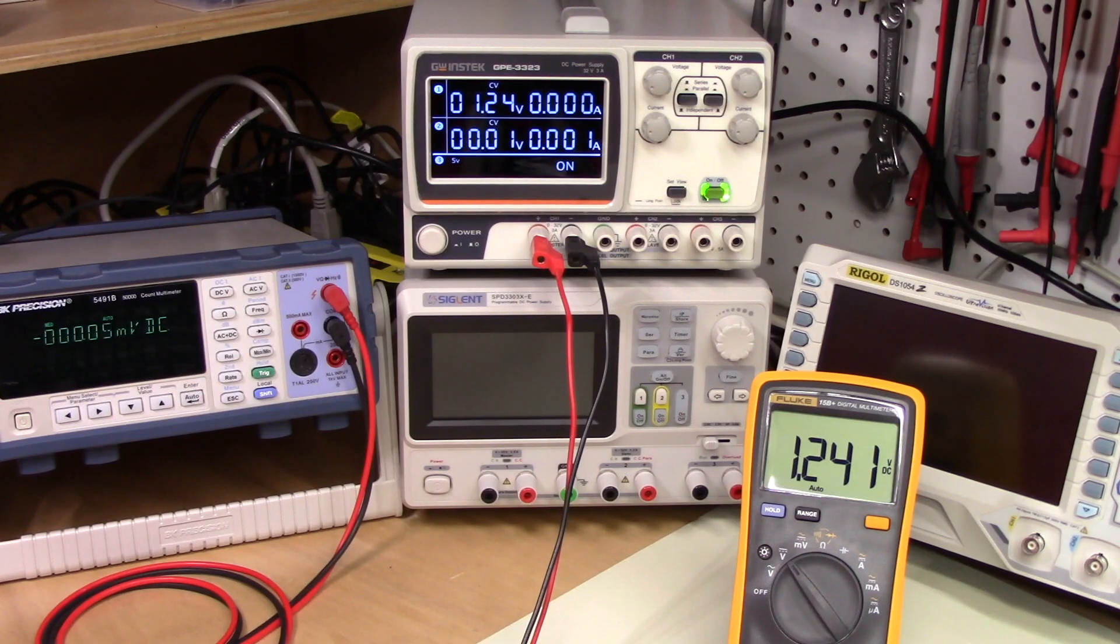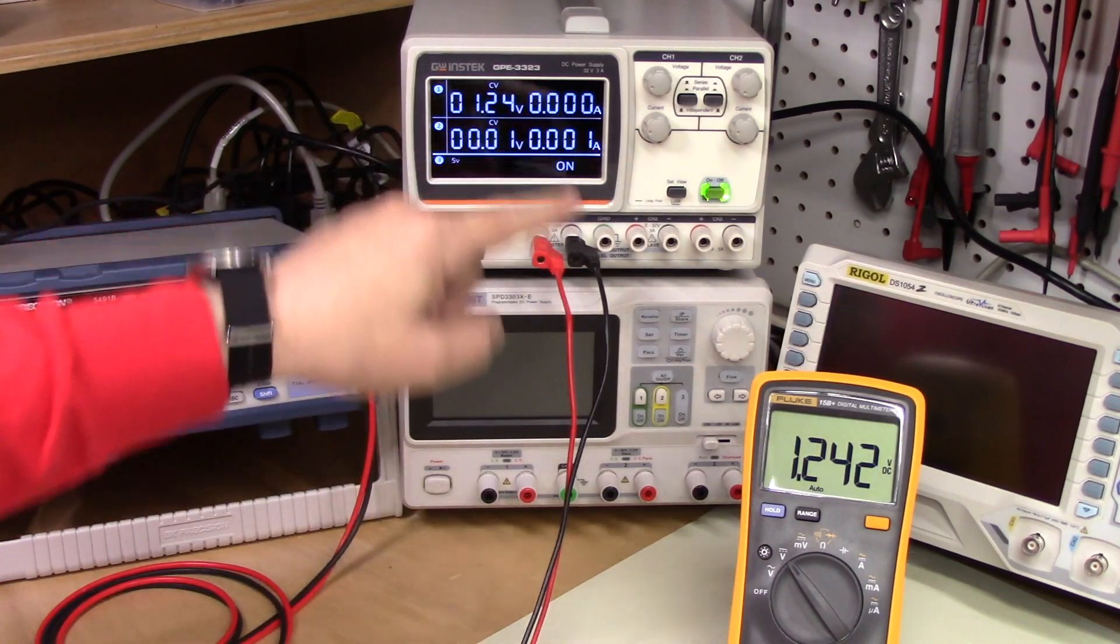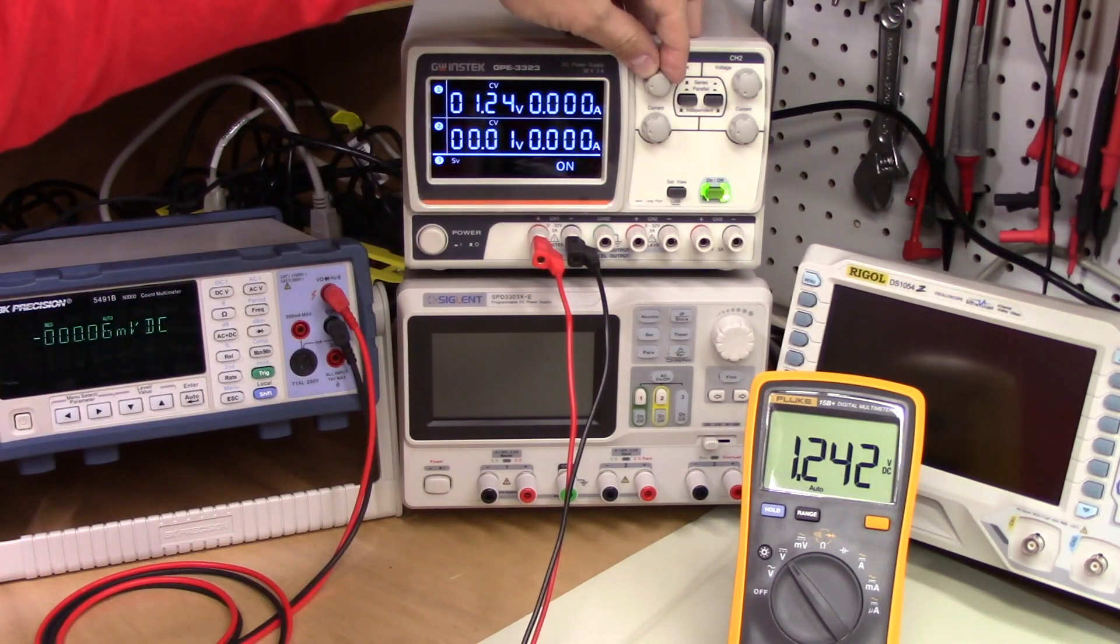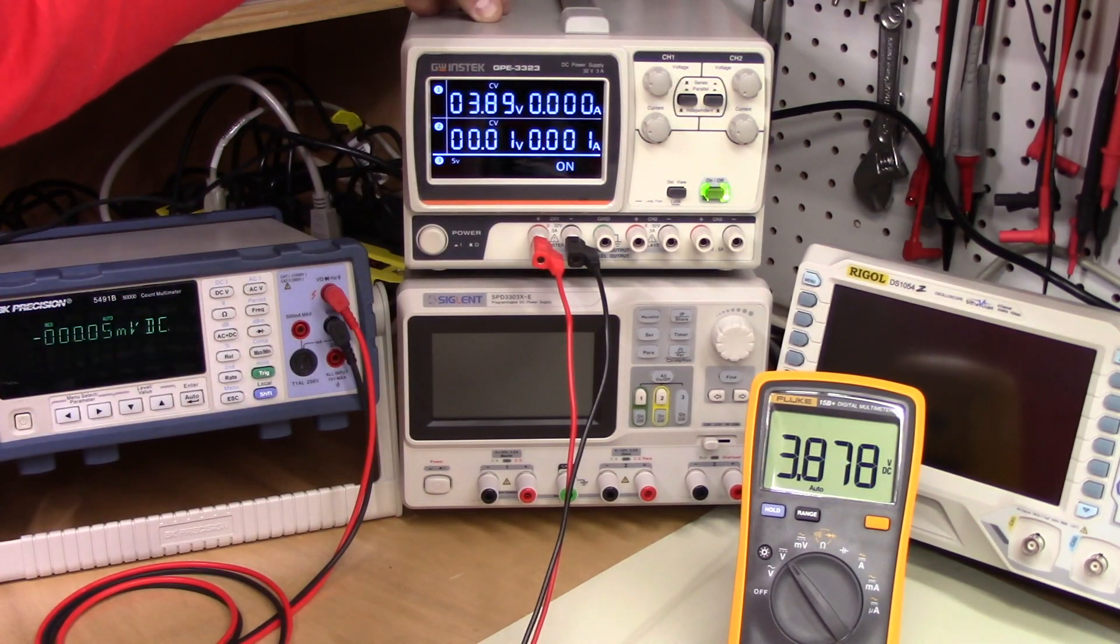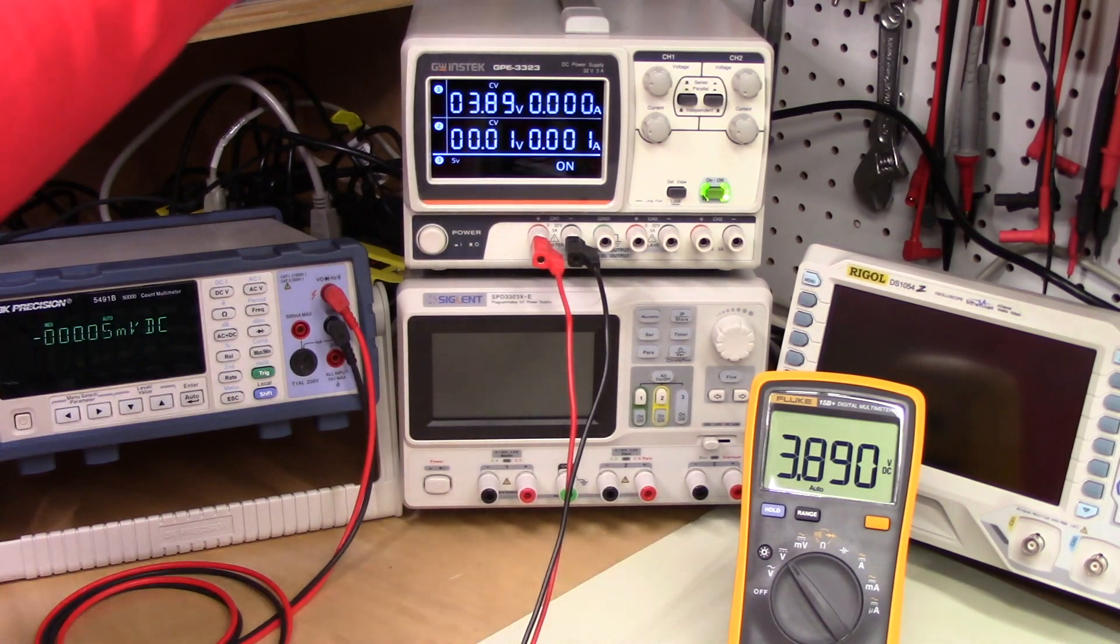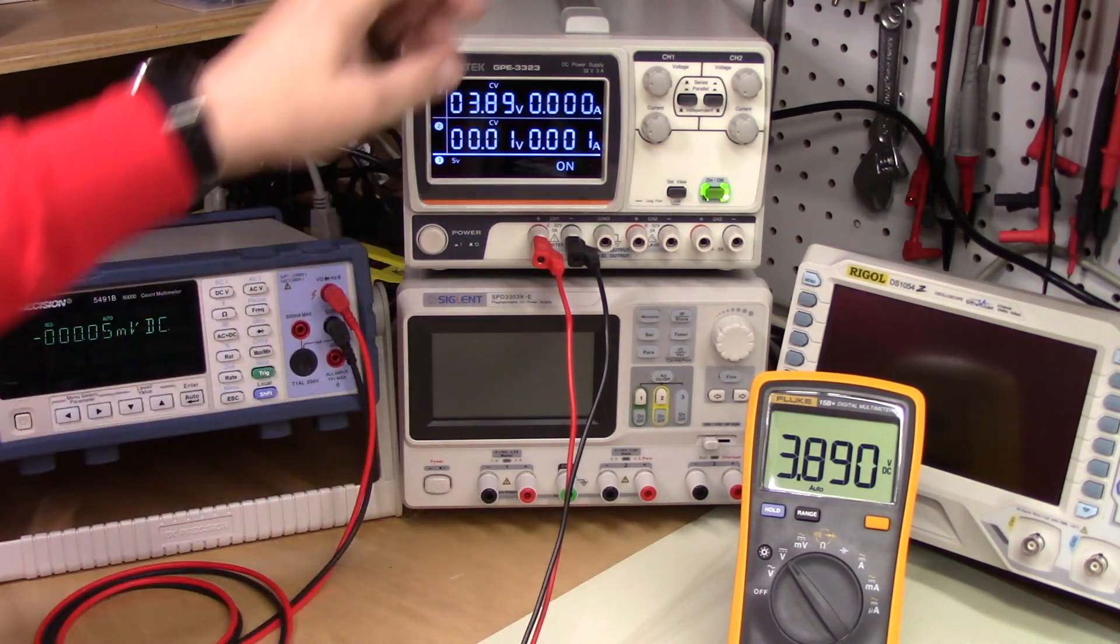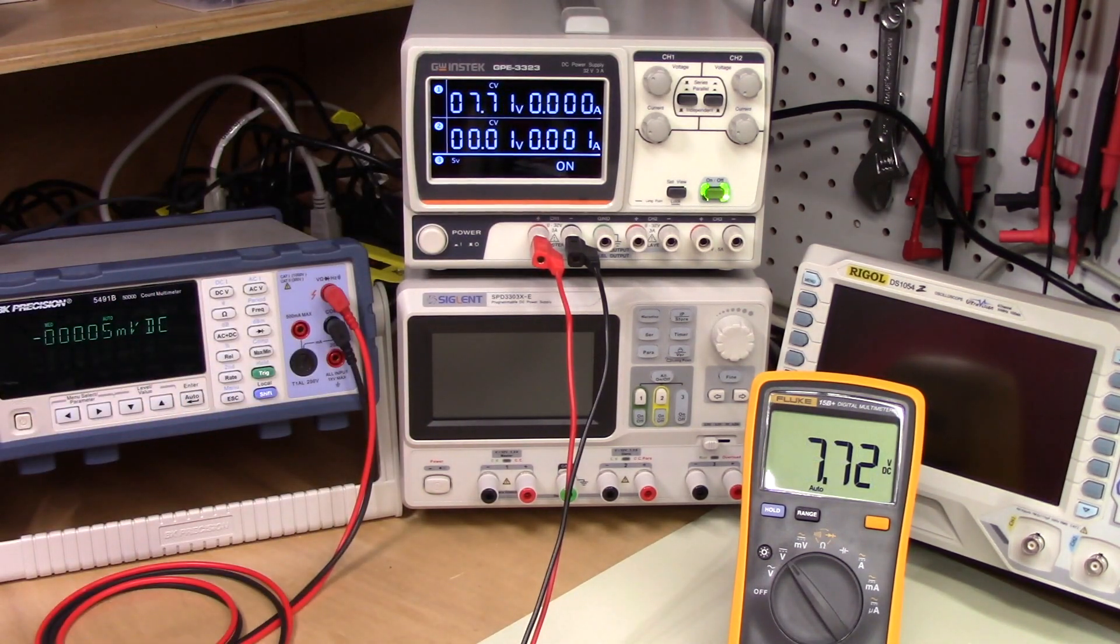And we'll just look at channel 1 first and we'll select 1.22 volts and then we press ON. And so we get 1.24 there and 1.24. So that tracks quite nicely. 3.89 on the GW WindsTech and 3.89 on the Fluke.